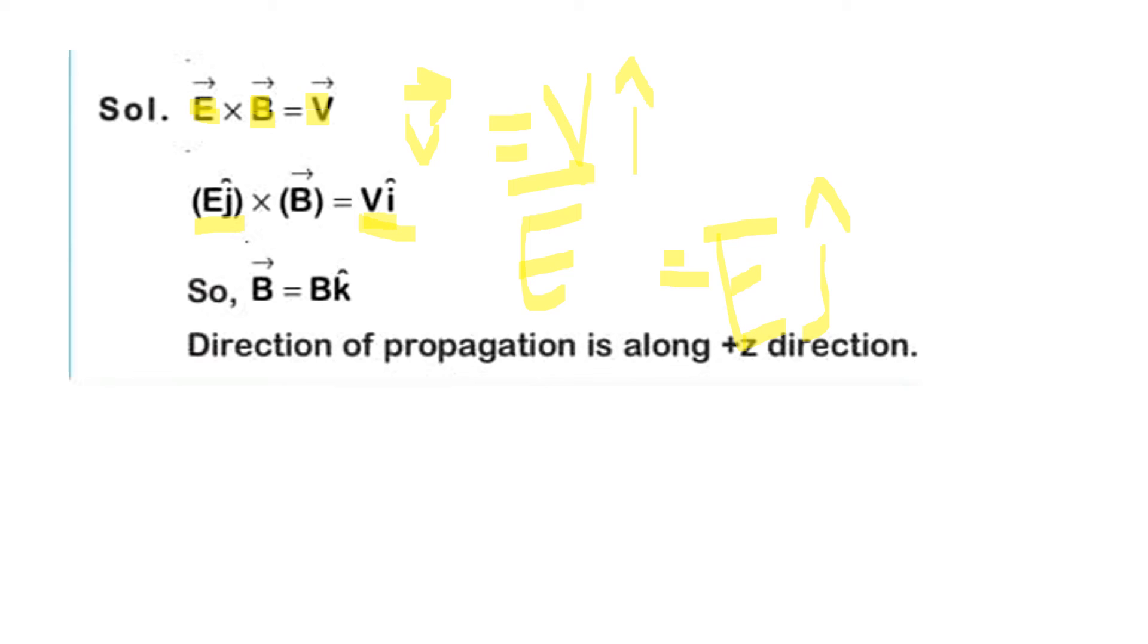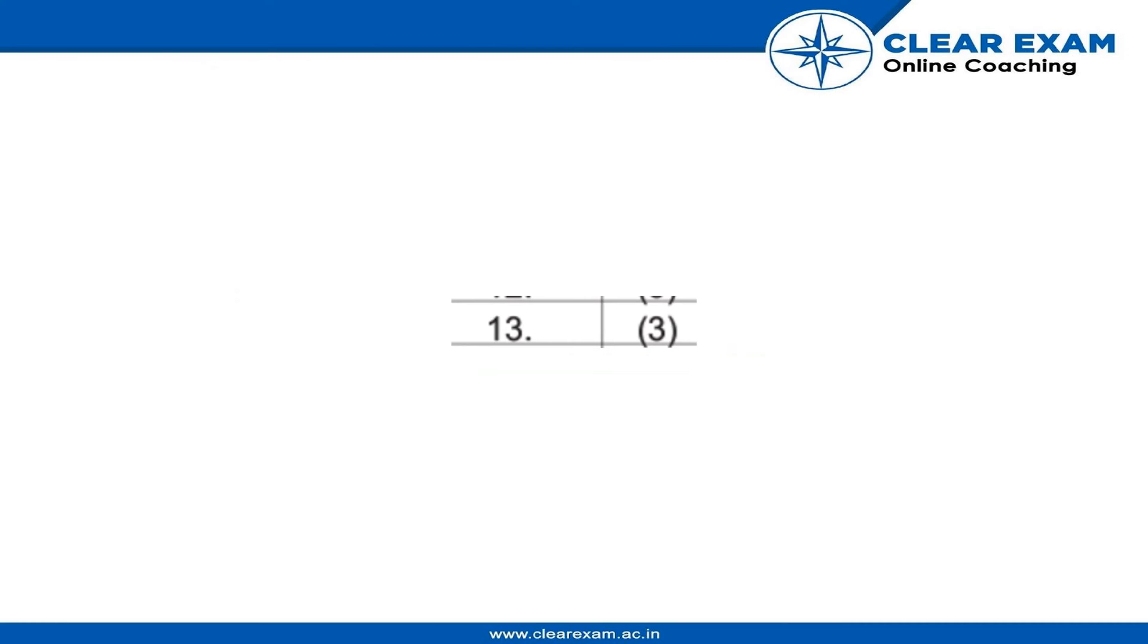Solving this cross product, we get B = Bk. So the direction of the magnetic field is along the +z direction. The correct answer is option 3, which is positive z direction. Thank you everyone.